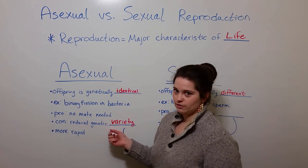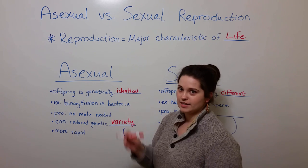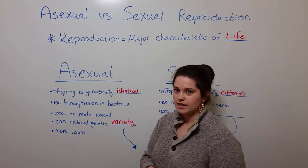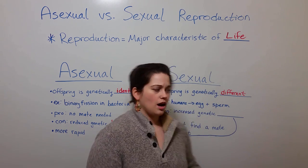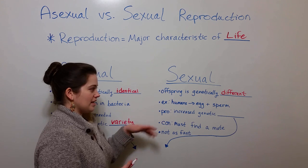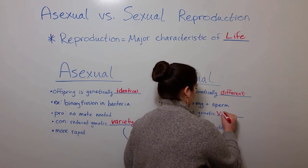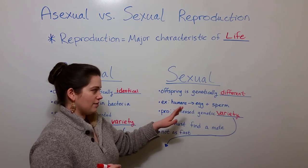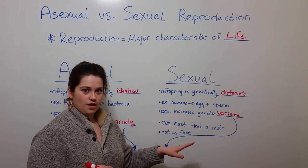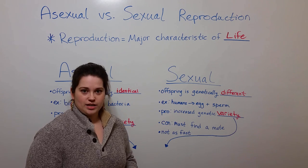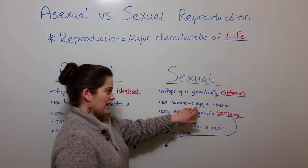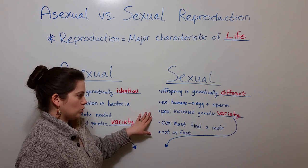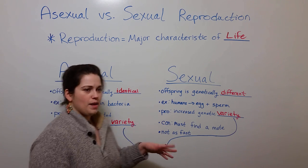That reduced genetic variety is because the offspring are genetically identical to the parent's cells, with the exception of any random mutations that happen during the DNA replication process. The pro of sexual reproduction is increased genetic variety. This is because the offspring have half of their DNA from their mother, half of their DNA from their father, as well as any genetic mutations that arose during the DNA replication process that led to the gametes used in the reproductive process.